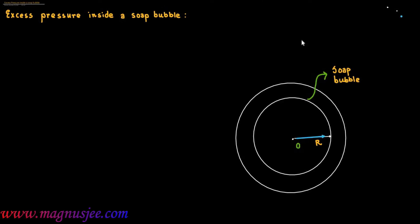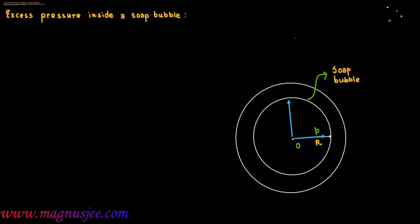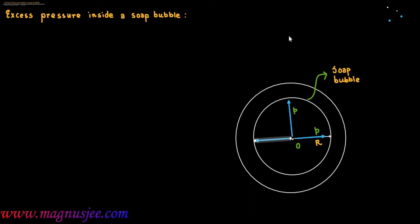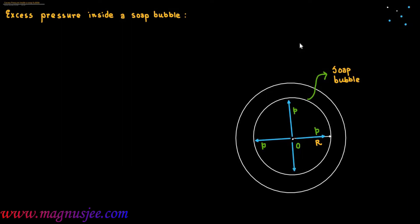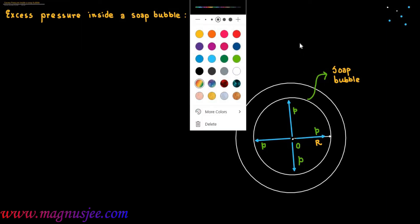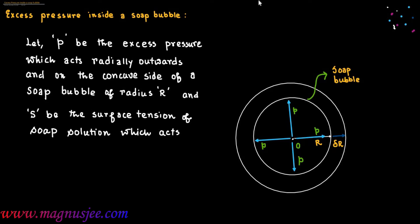The excess pressure p acts radially inwards on the concave side of the soap bubble, and p is the excess pressure which acts radially outwards. Due to this excess pressure, the radius of the soap bubble increases by a very small amount delta r.